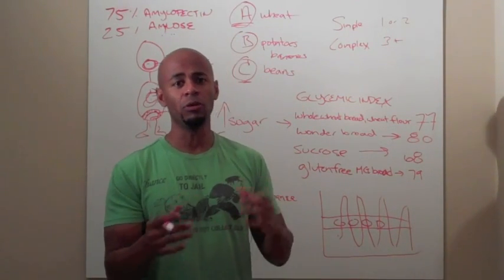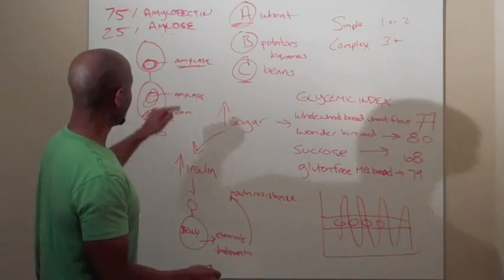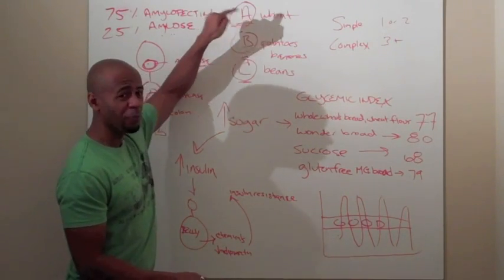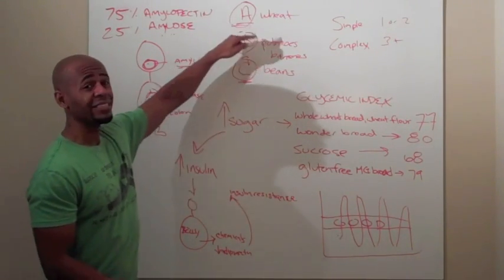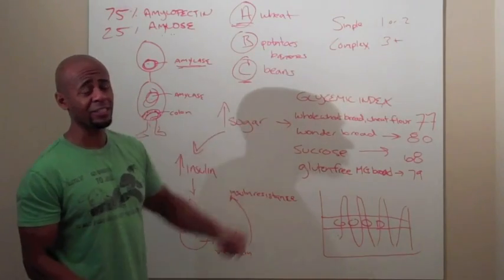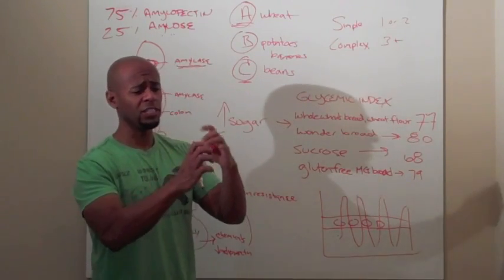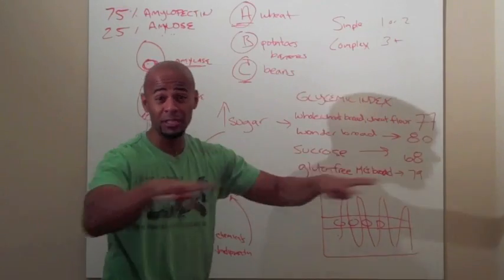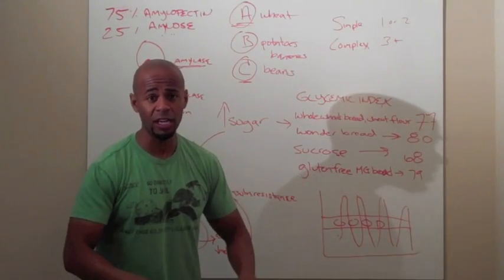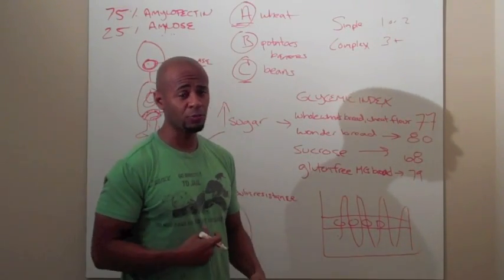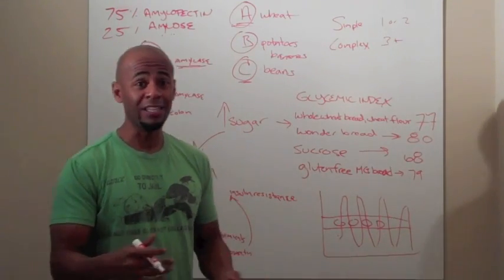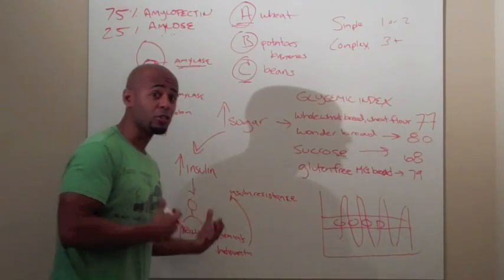Amylopectin A is what we find in wheat. And amylase has a high affinity for amylopectin A. It breaks it down very, very easily. So it takes that chain of simple sugars, which makes that complex carbohydrate, and rips them apart by way of digestion. So when that gets down to your small intestine, what happens to all of that resultant sugar? It's going to make it into your bloodstream.